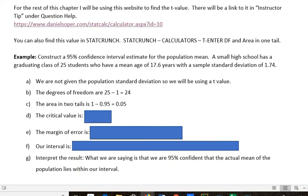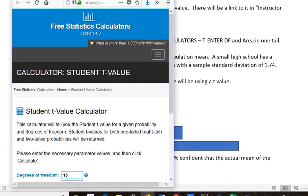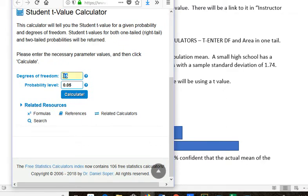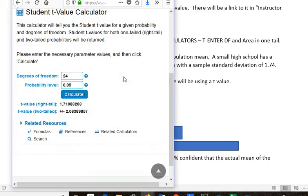You just are entering those two things. So I'm going to enter the degrees of freedom, which for our problem was 24, and then the probability level we said was 0.05. So we can calculate that. It tells us for the two tail value, we get 2.0639 if you round to four places.